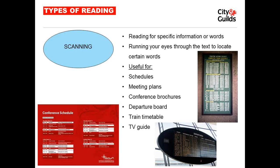Now let's look at the four sub-skills or types of reading. The first is scanning — reading for specific information or words, running your eyes through the text to locate certain words. In real life, scanning is used for reading schedules, meeting plans, conference brochures, departure boards at the airport, train timetables, or the TV guide. For example, at the airport you're only looking for your own flight, not interested in any other.